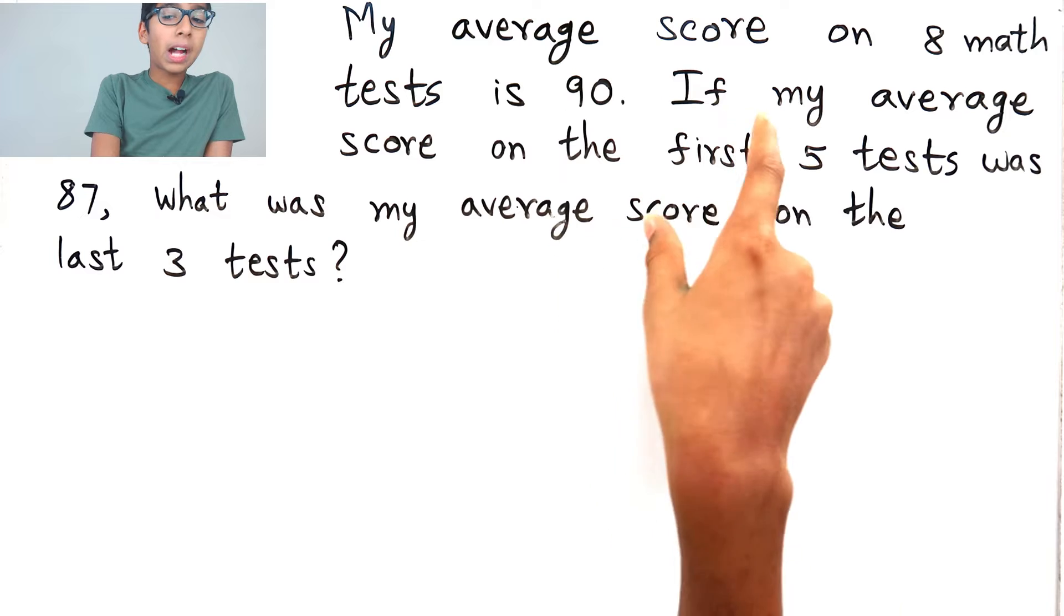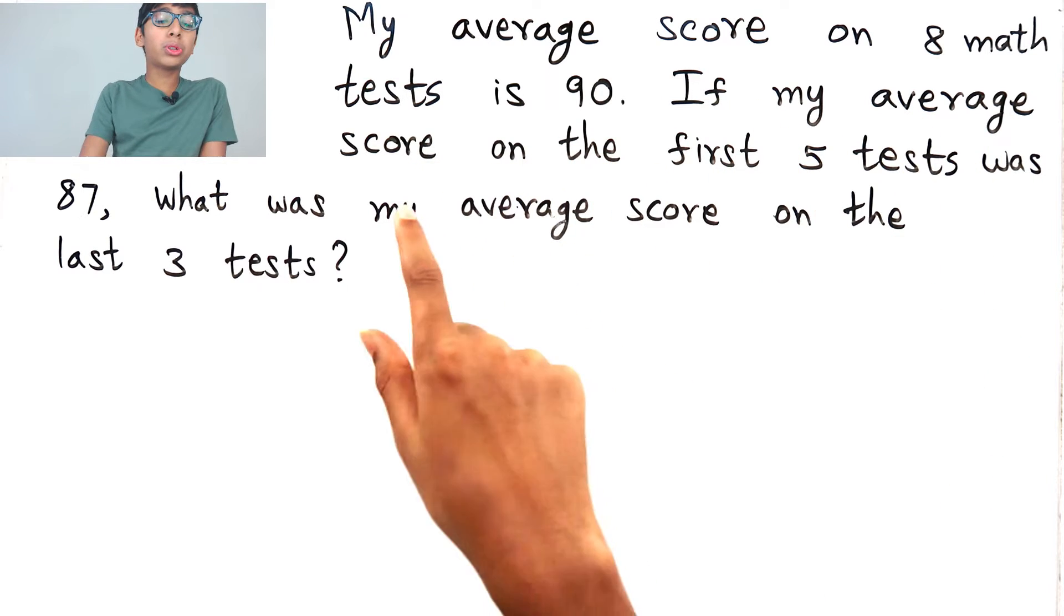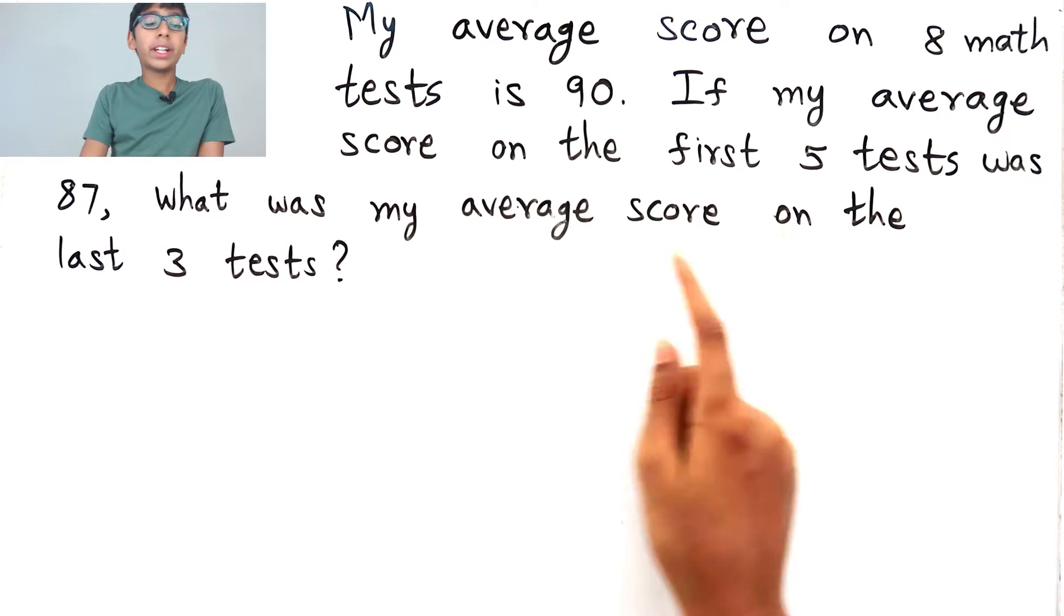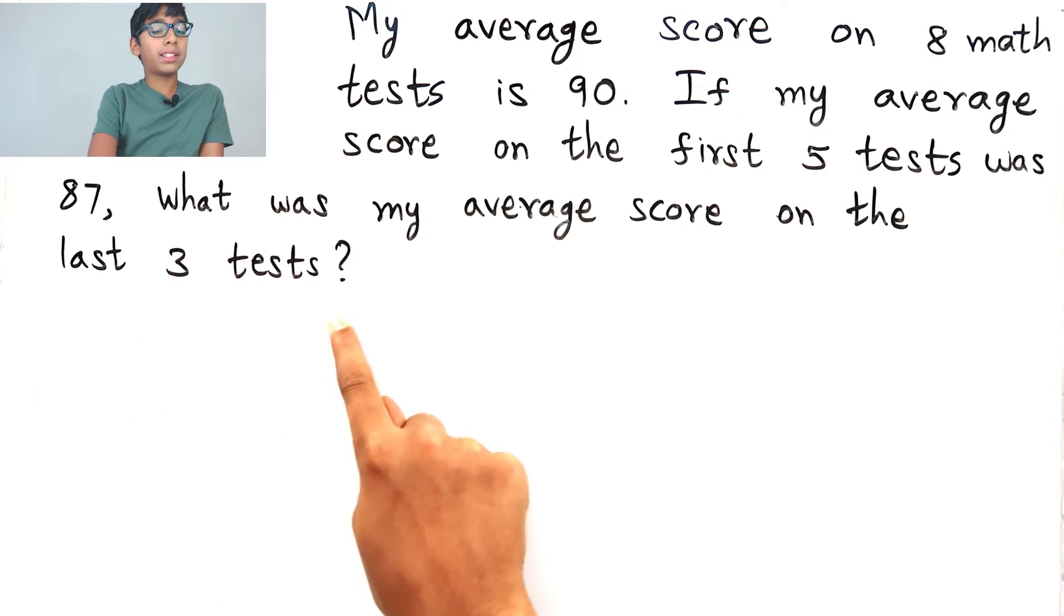Hi guys! In this video, let's do a word problem. So the problem is, my average score on 8 math tests is 90. If my average score on the first 5 tests was 87, what was my average score on the last 3 tests?